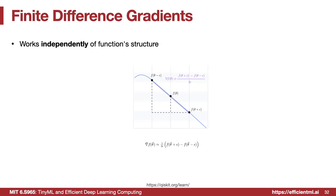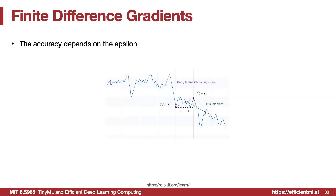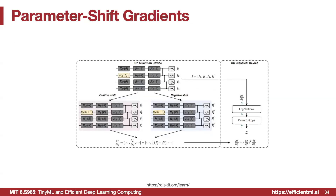The first gradient computation method is finite difference: evaluate the circuit at θ + ε and θ − ε to approximate the gradient. This works for arbitrary functions but provides only approximate gradients, and the accuracy is sensitive to the choice of ε — too large an epsilon leads to significant error compared to the true gradient.